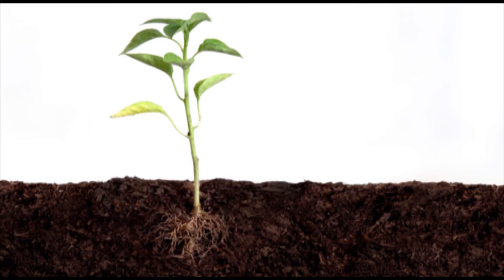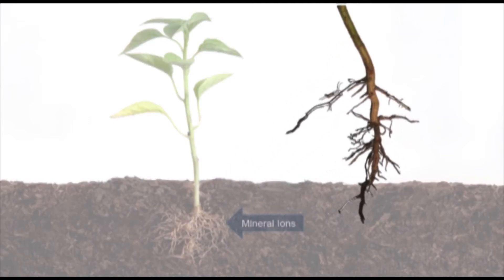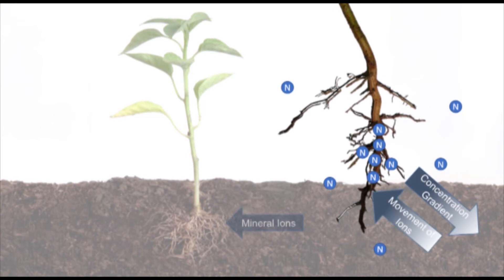Organisms need essential nutrients and minerals to survive. For example, the transport of minerals from the soil through the root hairs takes place by active transport.